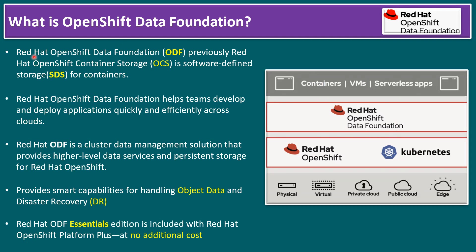Let's understand the definition as per the Red Hat documentation. Red Hat OpenShift Data Foundation, in short form ODF — previously called Red Hat OpenShift Container Storage, in short form OCS — is software-defined storage for containers. ODF helps teams to develop and deploy applications quickly and efficiently across clouds. Red Hat ODF is a cluster data management solution that provides higher-level data services and persistent storage for Red Hat OpenShift, and provides smart capabilities for handling object data and disaster recovery.